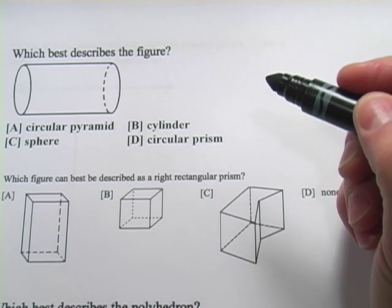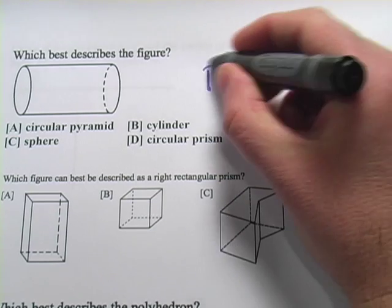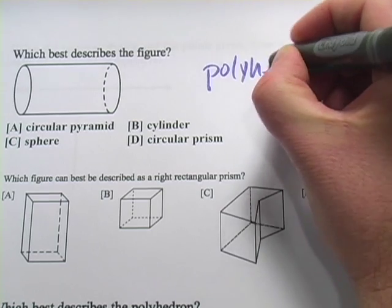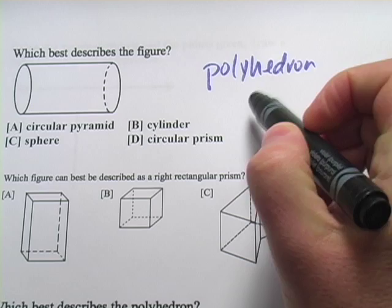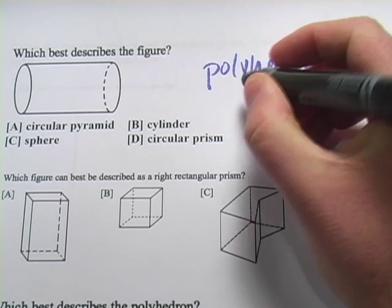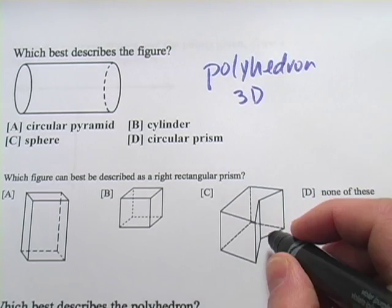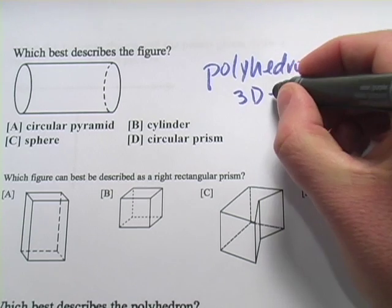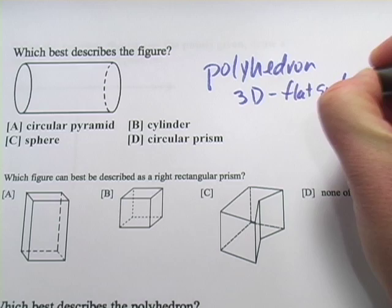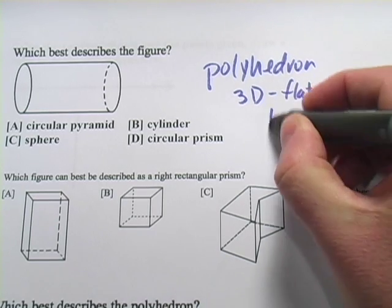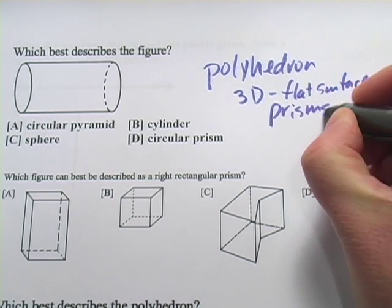In these problems we're doing a little bit of work with identifying and naming polyhedrons. Polyhedrons are, well they're sort of like polygons except they're three-dimensional. So they're 3D and they have flat surfaces.